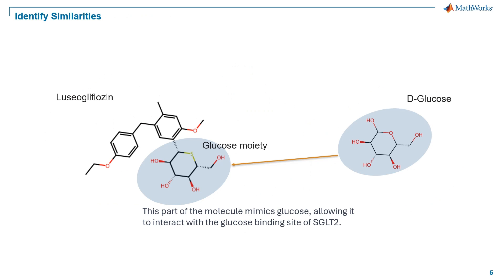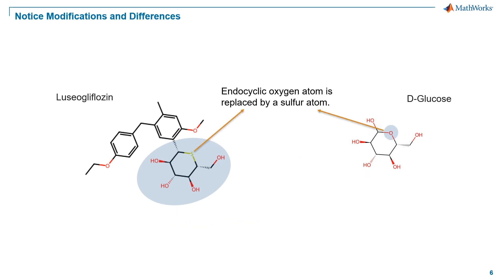Now let's look closer at these molecules. The first thing I notice is the similarity between the two. The glucose moiety in luciogliflozin mimics glucose, allowing it to interact with the glucose binding site of SGLT2. But looking closer, you see that the endocyclic oxygen atom is replaced by a sulfur atom. We want to see and notice these modifications that aim to optimize the drug's therapeutic profile.